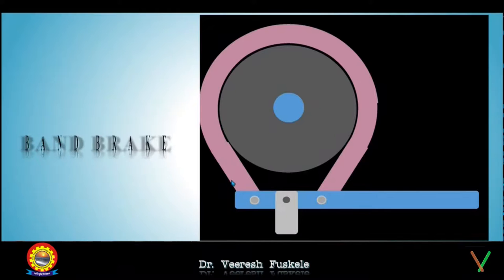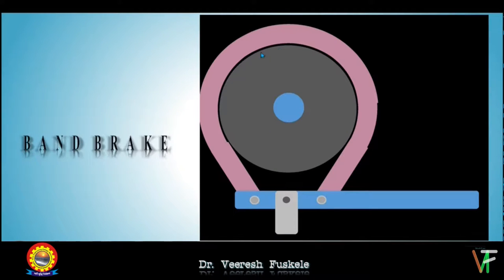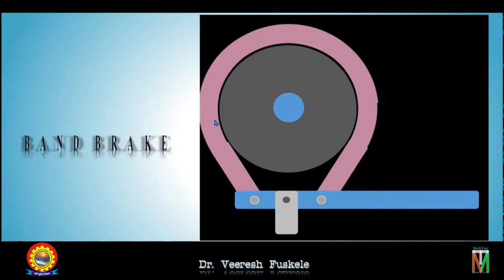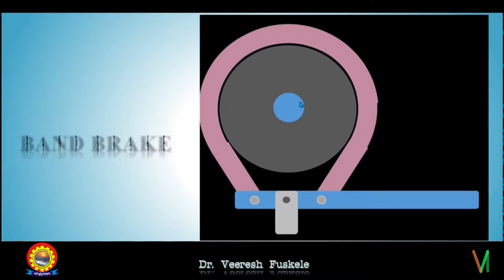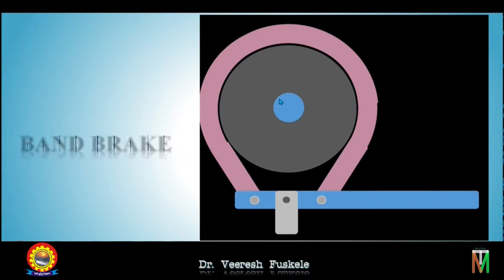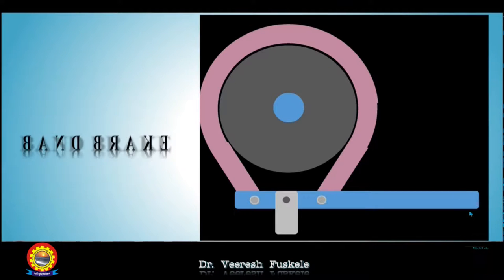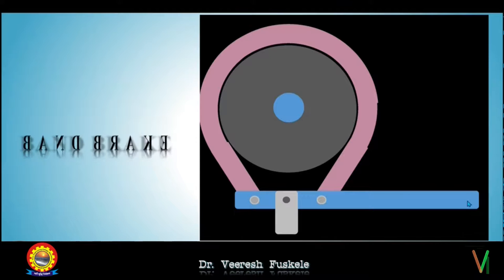Band brake: it consists of a rope, belt, or flexible steel band which is lined with frictional material. This band is pressed against the external surface of the cylindrical drum. When the brake is applied, the force is applied at the free end of the lever. This is a simple band brake.